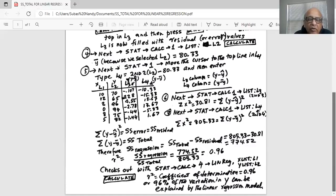With STAT, CALC 4, LINREG, x list is L1, y list is L2, and calculate, we'll get R squared as 0.96. Remember R squared is the coefficient of determination. And 0.96 R squared means 96% of the variation in y can be explained by the linear regression model.